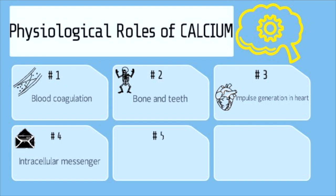5. Calcium controls the excitability of nerves and muscles and regulates the permeability of cell membranes.